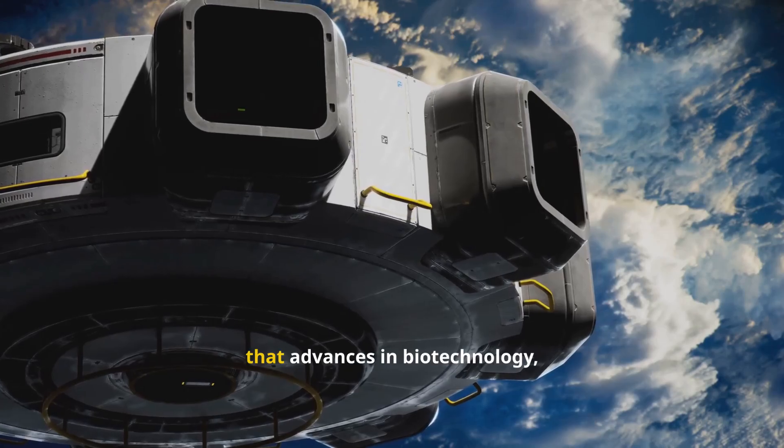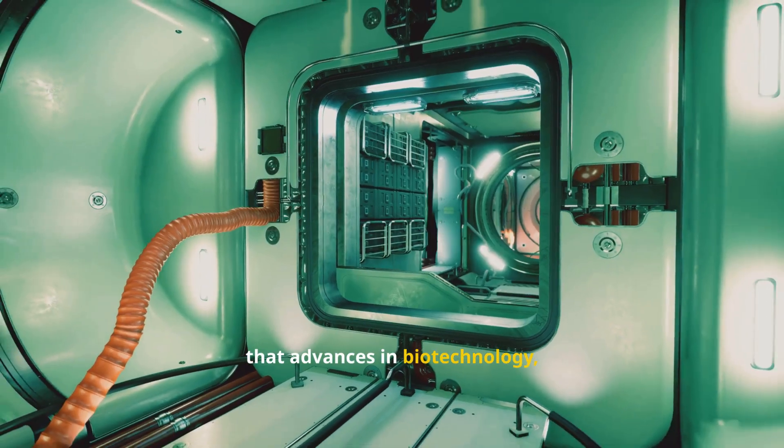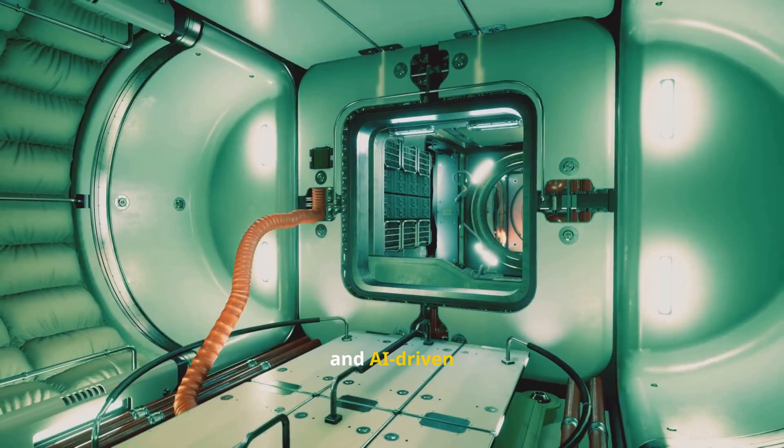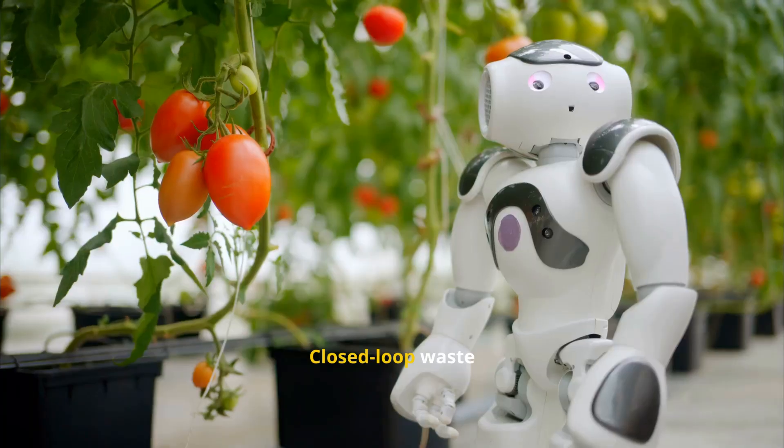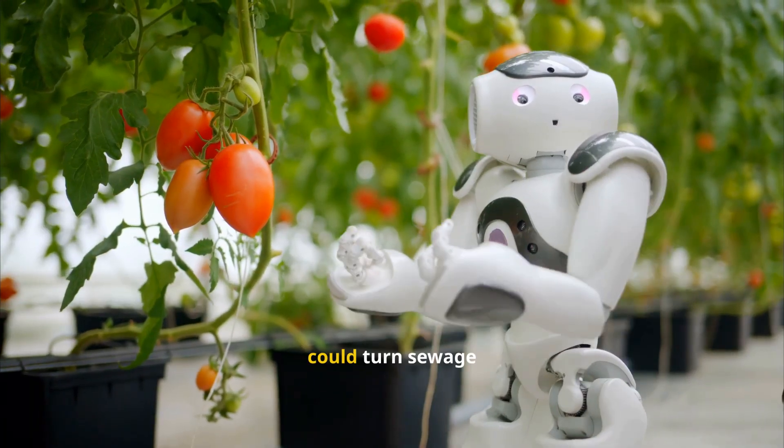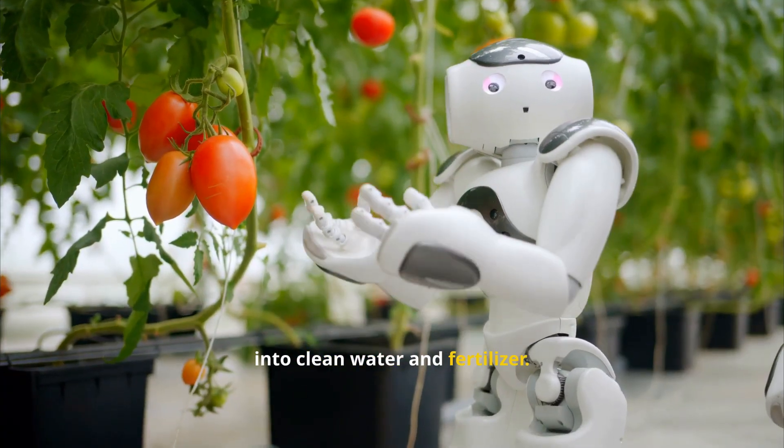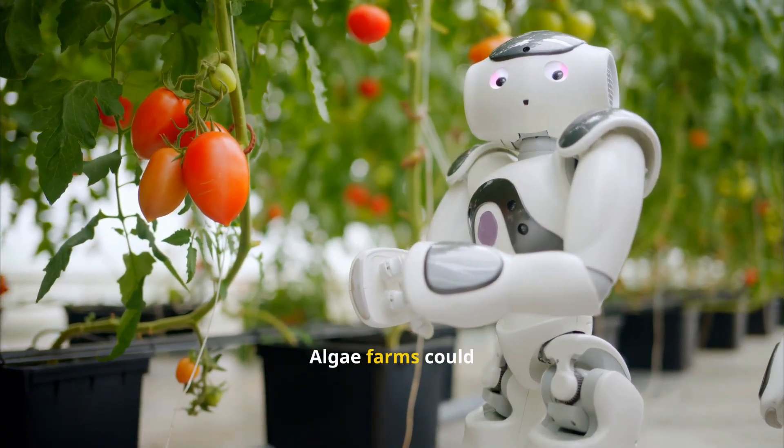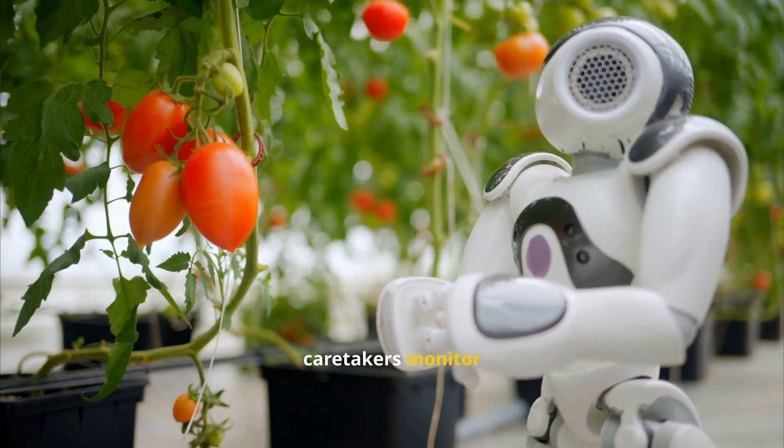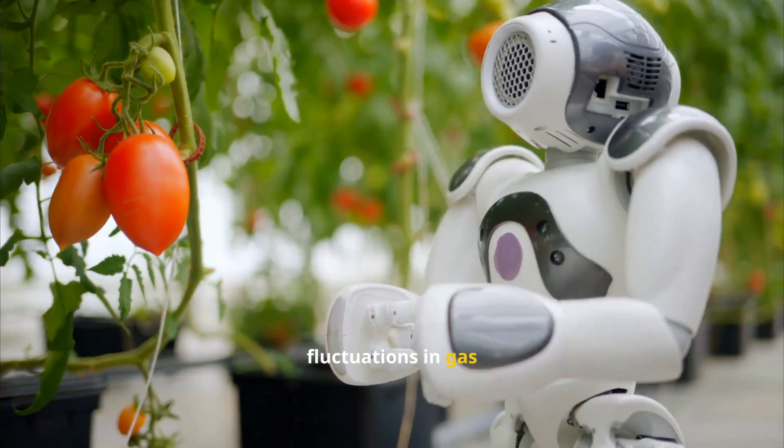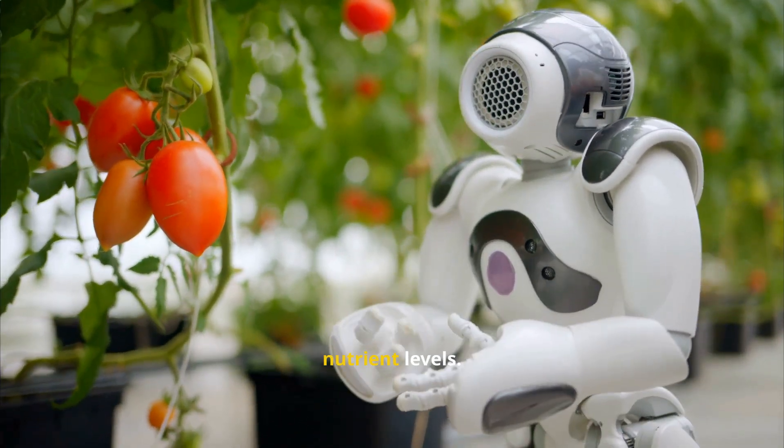Still, engineers argue that advances in biotechnology, genetic engineering of crops, and AI-driven system management could one day solve these problems. Closed-loop waste recycling systems could turn sewage into clean water and fertilizer. Algae farms could produce both oxygen and food, while robotic caretakers monitor the smallest fluctuations in gas composition or soil nutrient levels.